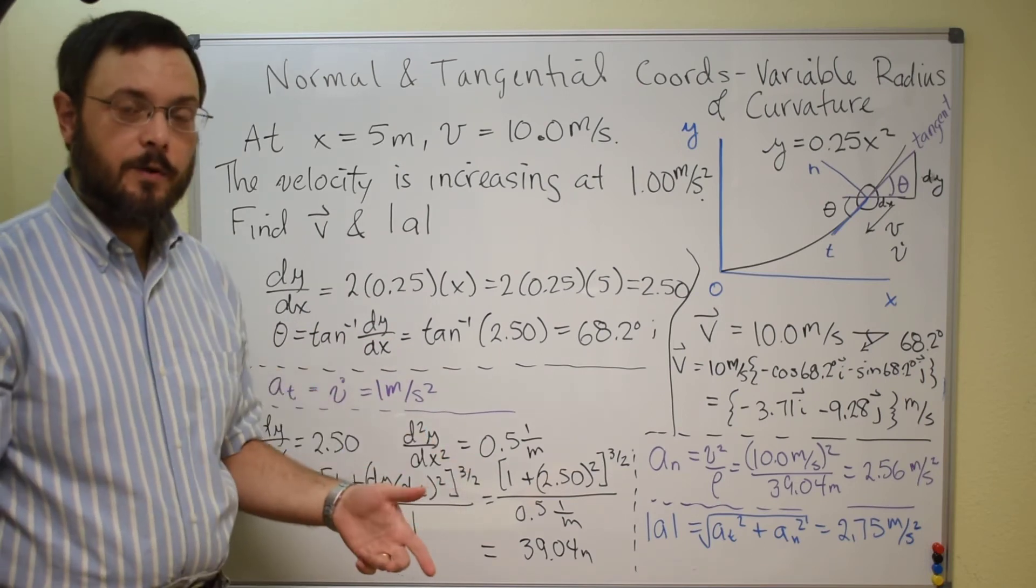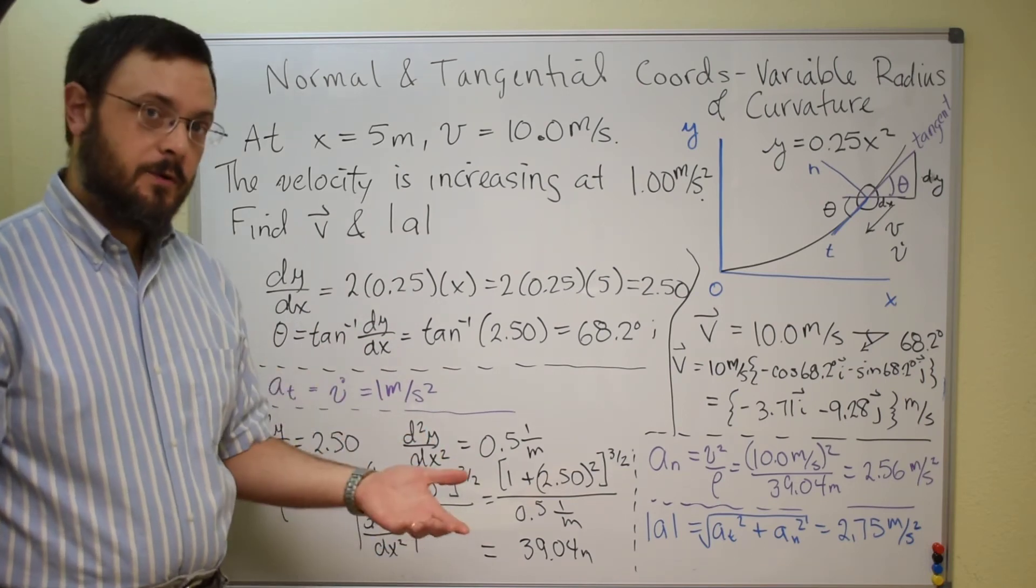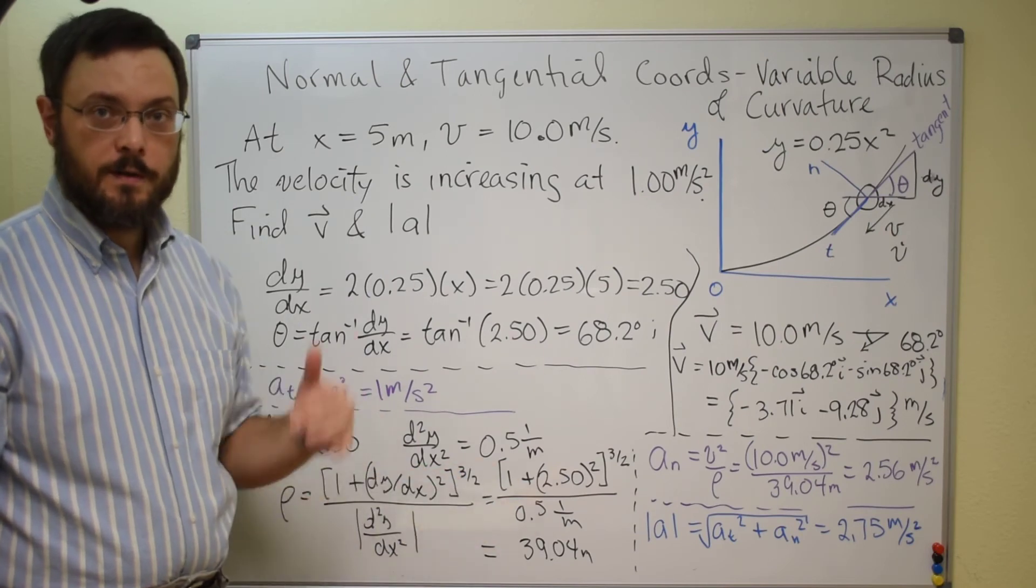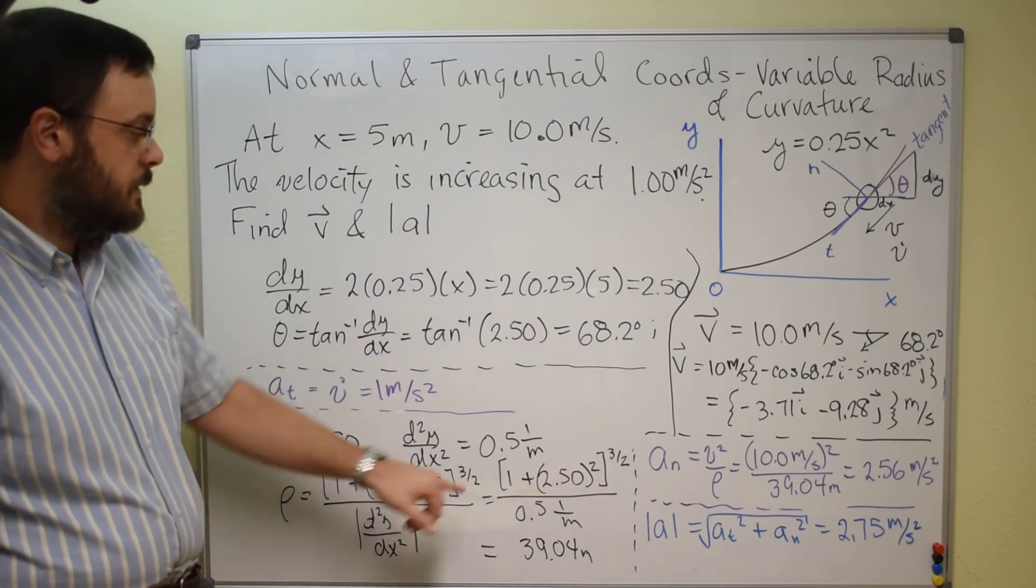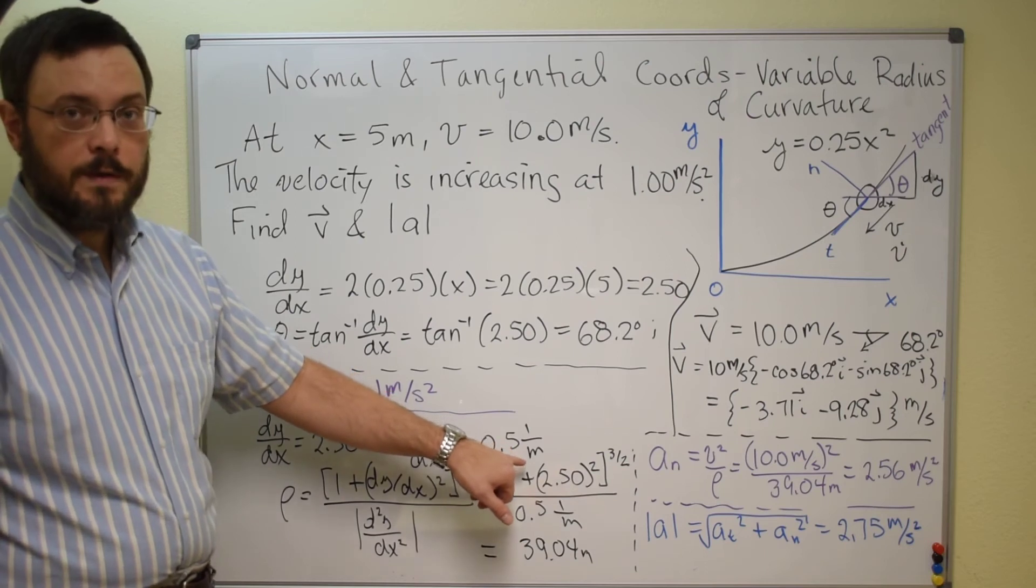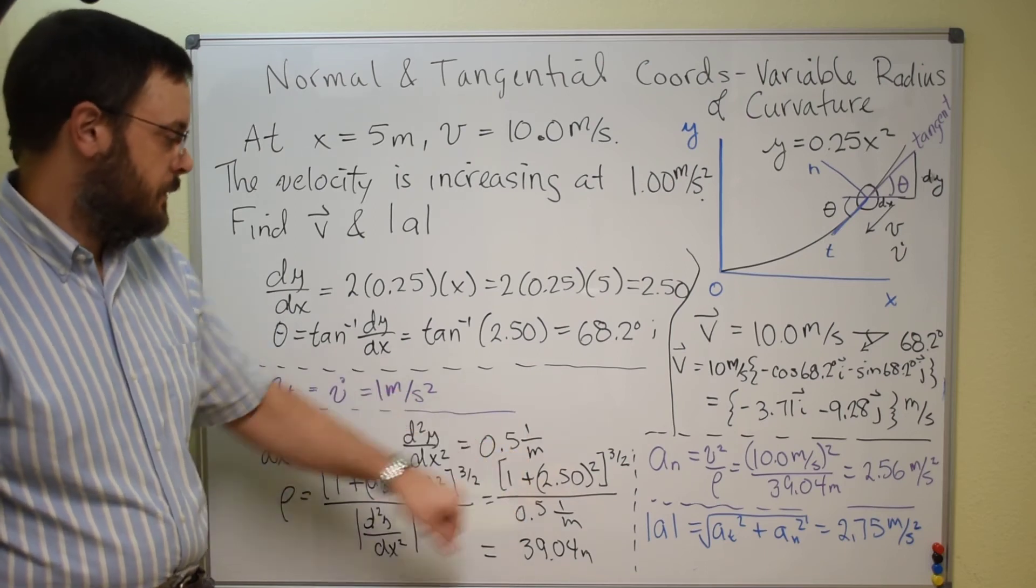When you take your second derivative, it's how the first derivative, which is unitless, changes with respect to x, which has length units, so your second derivative has units of 1 over length in this case.